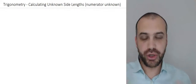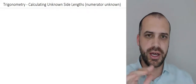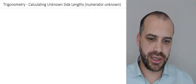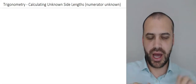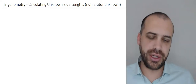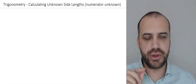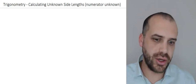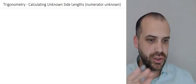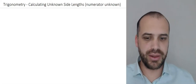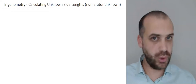In this video we're going to be using SOHCAHTOA trigonometry to find unknown side lengths. There are two kinds of unknown side length questions. We're going to focus on the numerator-unknown style questions today. Let's do some questions.